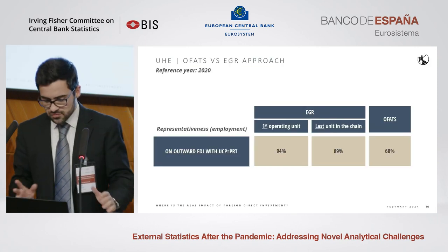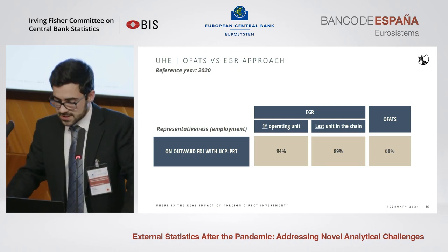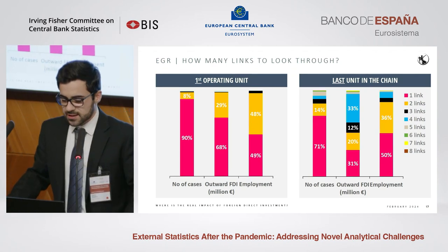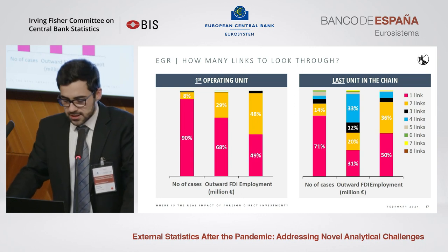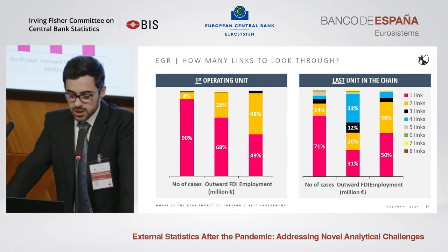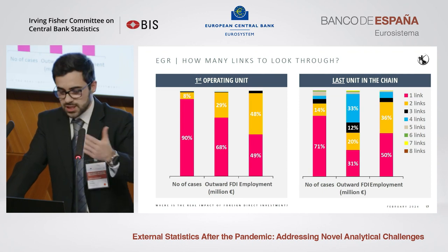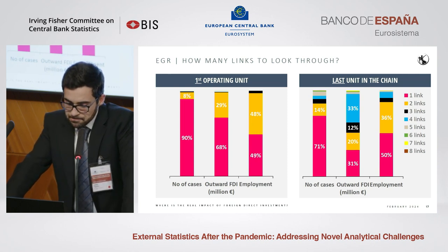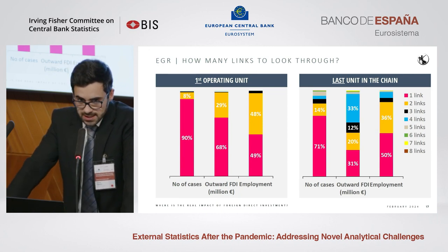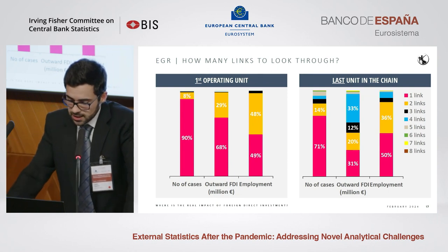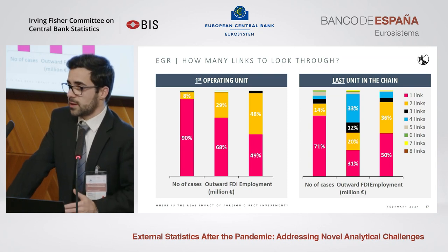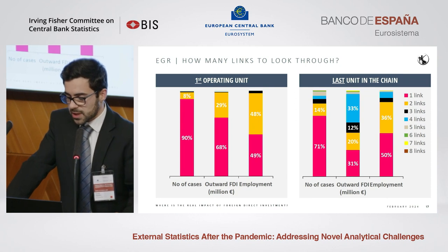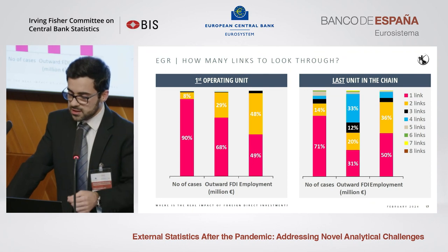Moving to results: the representativeness of our exercise is quite high, especially for the EGR approaches. Looking at how many links we traverse before reaching the ultimate host unit — for the first operating unit approach, in most cases (90%) we stop at the first unit, the immediate subsidiary, which accounts for 68% of outward FDI positions. Comparing with the last unit investment chain approach: most cases still stop at the first unit, but this only accounts for 31% of the outward FDI position — a reduction to less than half.